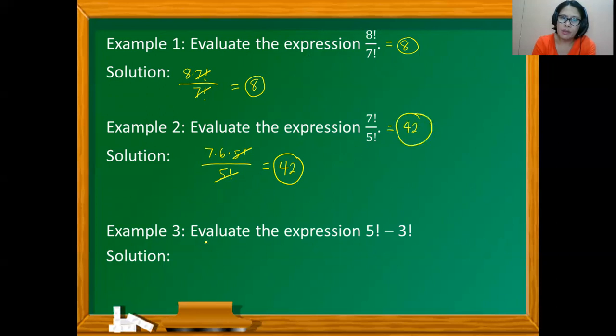So how about 5 factorial minus 3 factorial? So we know that 5 factorial equals 120 and 3 factorial equals 3 times 2 times 1 equals 6, so this is like 120 minus 6 equals 114. So that's 5 factorial less 3 factorial. So that's it for now, Grade 8.